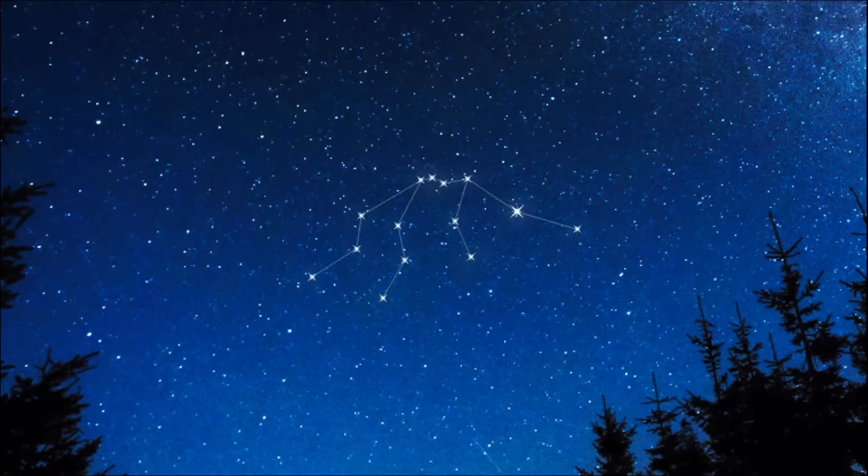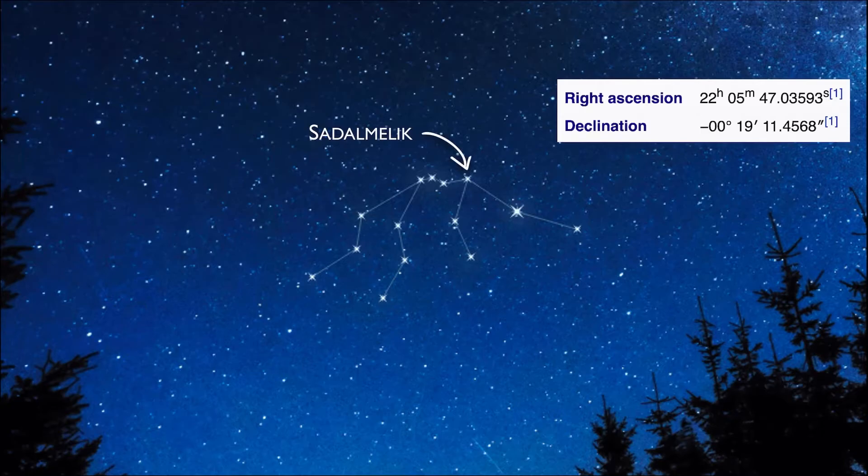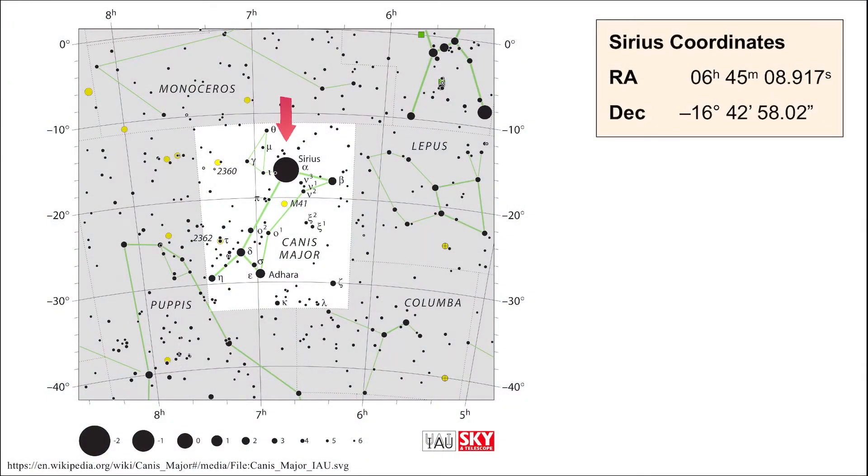Take Saad al-Malik, for example, the brightest star in the Aquarius constellation. It has a declination of 0 degrees, meaning that it lies directly on the celestial equator. But let's go back to Sirius.